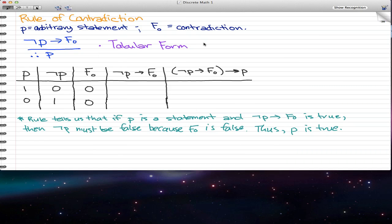Rule of contradiction. So, we have our P as our arbitrary statement, and FO as our contradiction, of course. So, when we negate P, that implies FO. So, that is our tabular form, and that infers P.